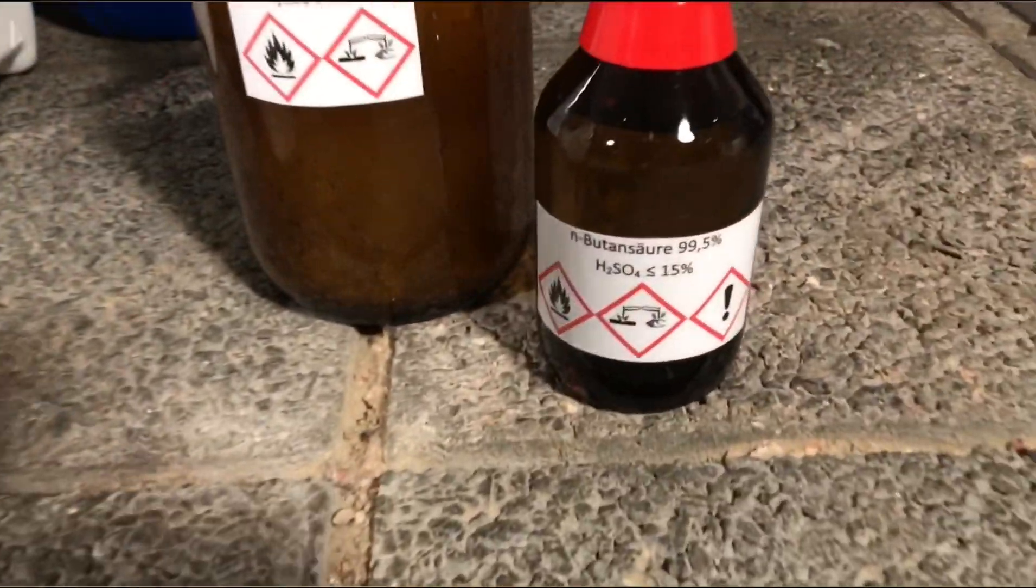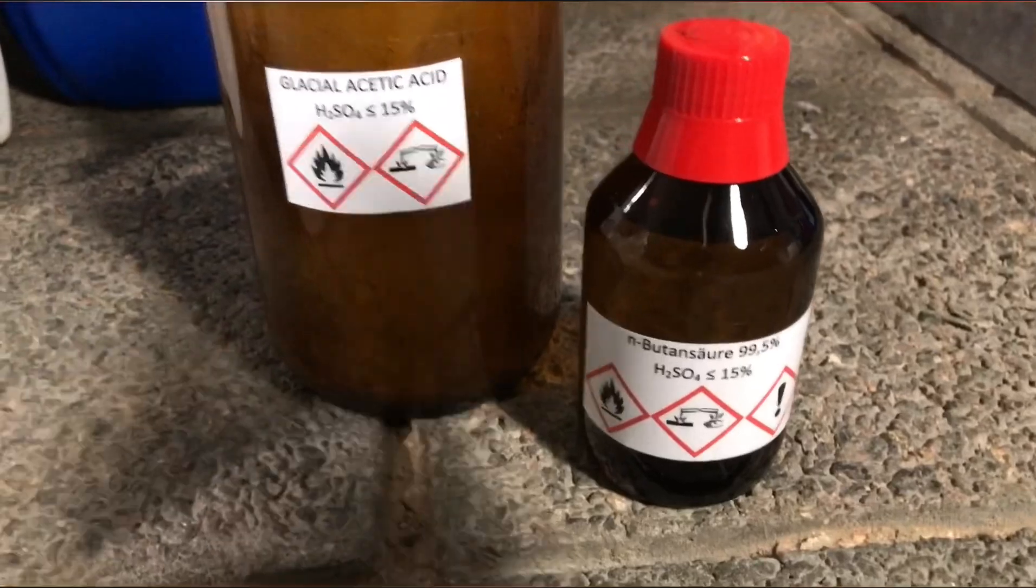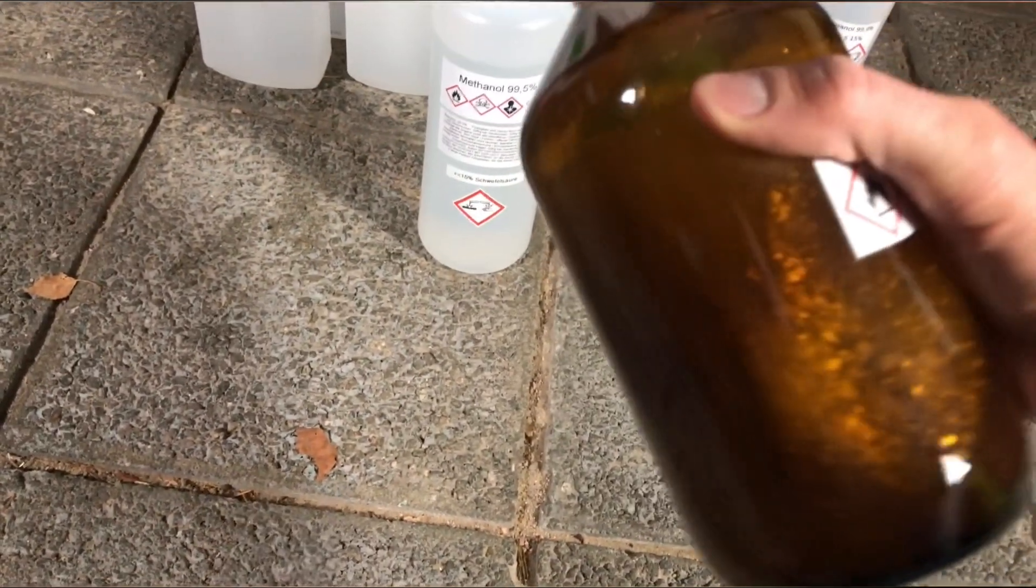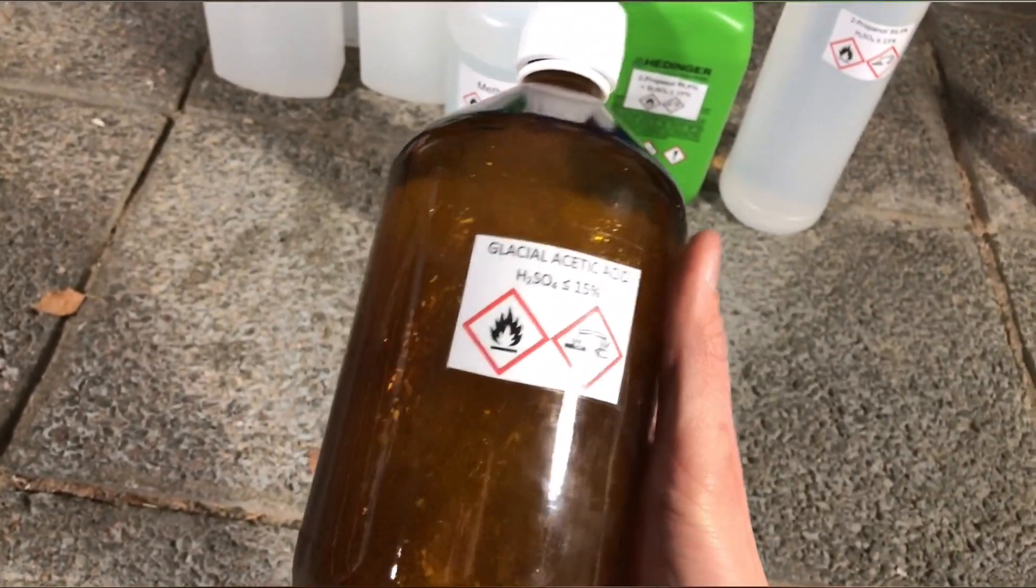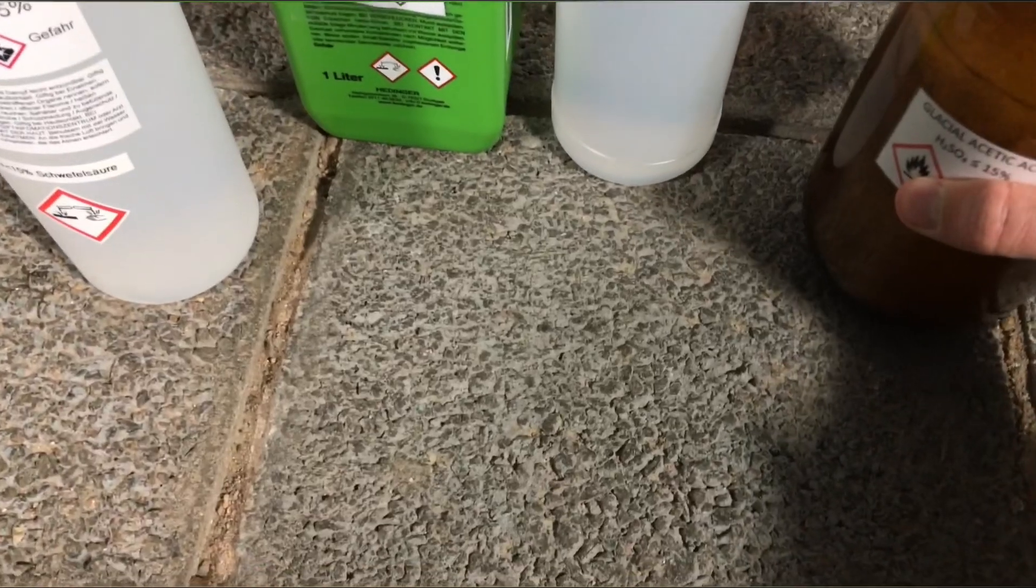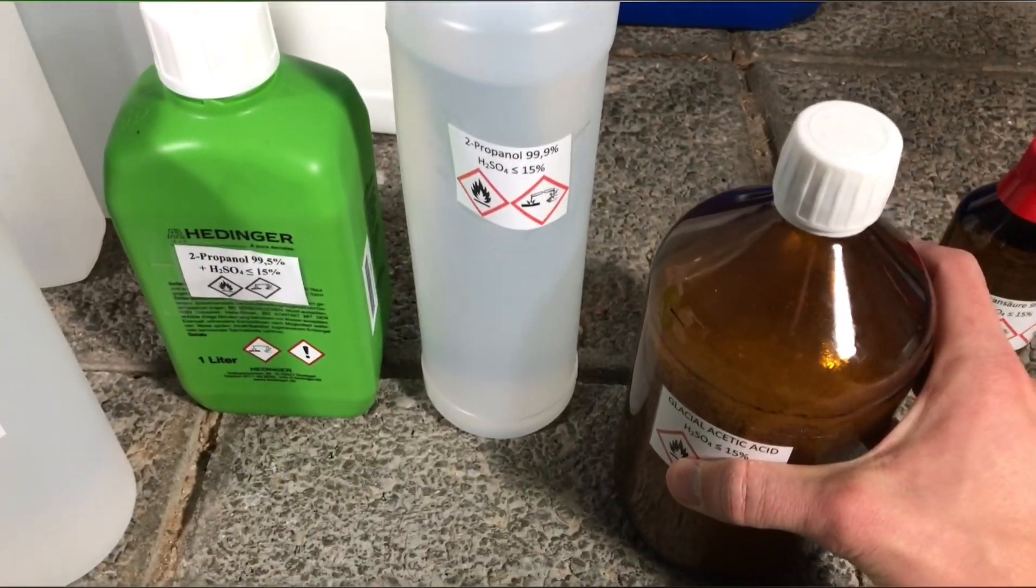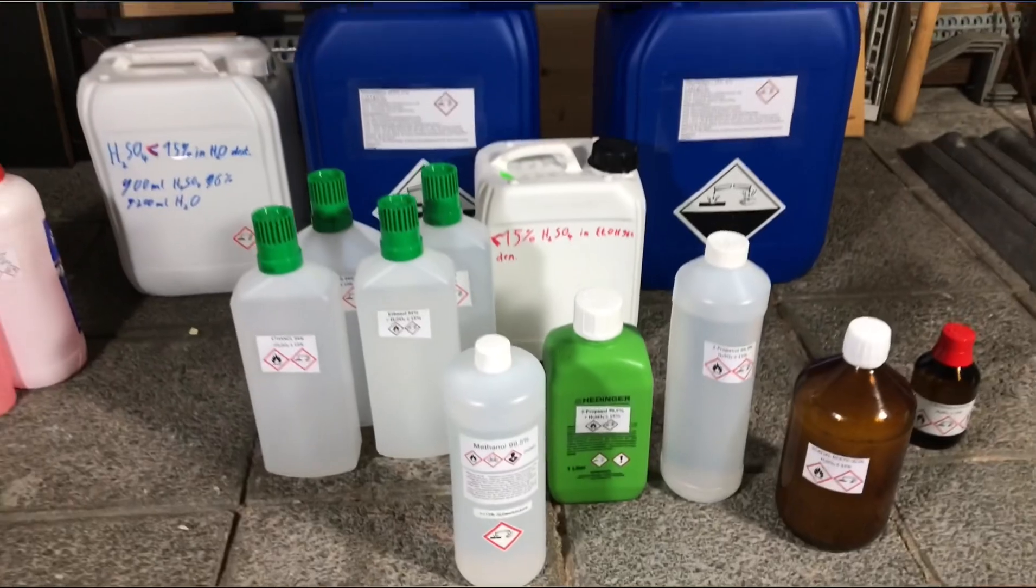Besides that, we also have sulfuric acid in butyric acid and in glacial acetic acid. The glacial acetic acid containing the sulfuric acid actually still froze. The acetic acid froze because it still contains little to no water. Without water, it forms hydrogen bonds which lead to this high freezing point.